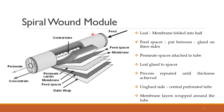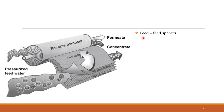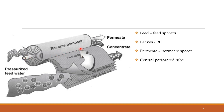Now we will see how reverse osmosis takes place in this setup. The feed is introduced through the feed spacers. The leaves are where the actual reverse osmosis process takes place. The dilute water — the permeate — comes out from the other side of the RO membrane and is carried through the permeate spacer, which is connected to the central perforated tube. The permeate collects in that central tube and flows out from there.